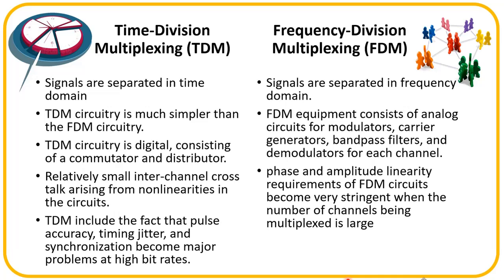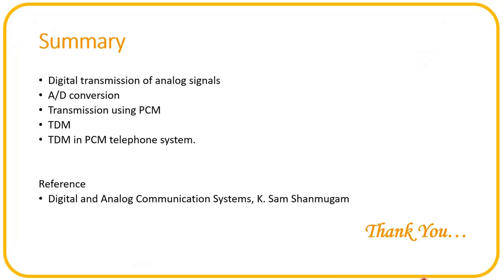However, TDM's crosstalk immunity is contingent upon a wideband response and the absence of delay distortion. Disadvantages of TDM include pulse accuracy, time jitter, and synchronization becoming major problems at high bit rates. By this, we have come to the end of this chapter. In this video, we have discussed the digital transmission of analog signals, how to convert an analog signal into a digital signal, how to transmit using pulse code modulation, time division multiplexing, and how a TDM-PCM telephone system works. Thank you for listening.